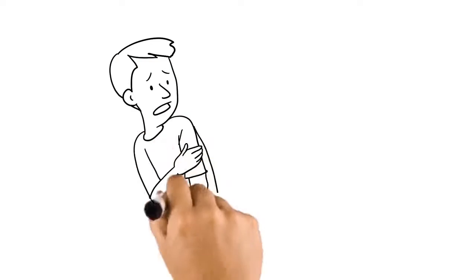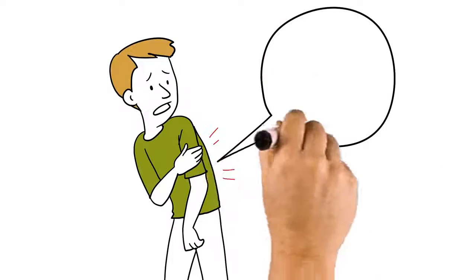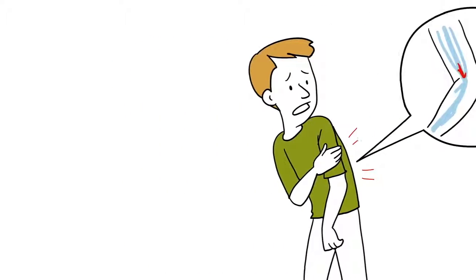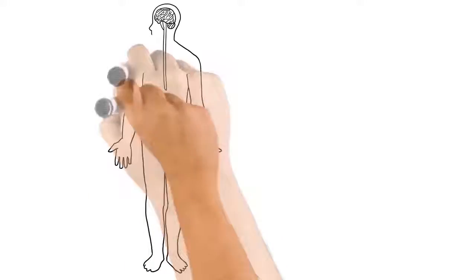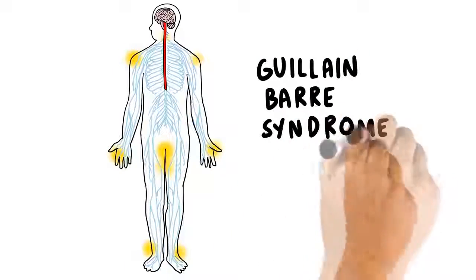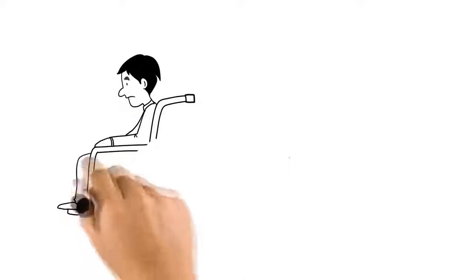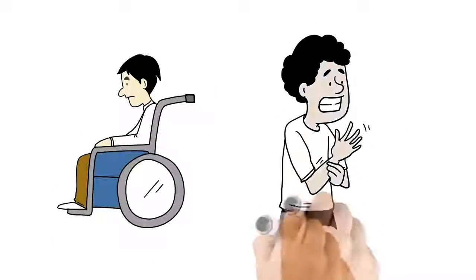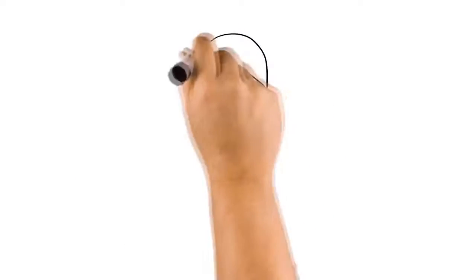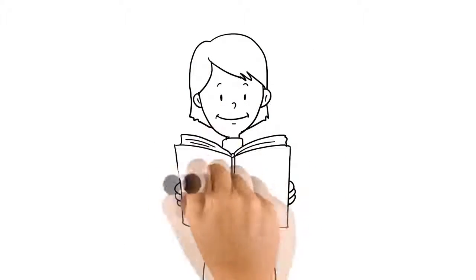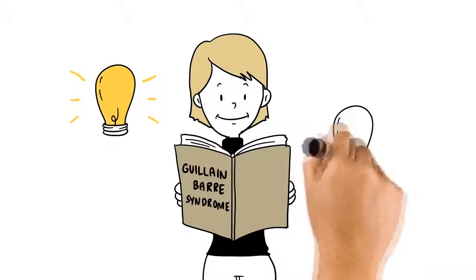But sometimes your muscles don't move when you want because of a nerve injury or disease. One disease that can do that is Guillain-Barre syndrome. We just call it GBS for short. Maybe someone you know has been diagnosed with GBS or maybe even yourself? If so, you probably want to know more about GBS and how it involves nerves like Ned.